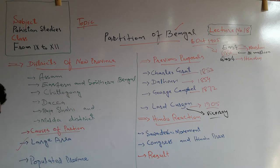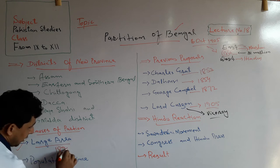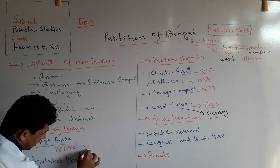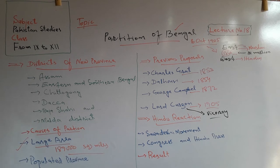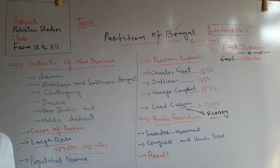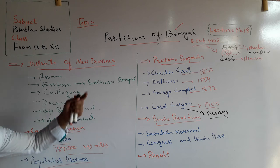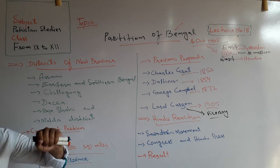The first reason to divide it was the large area — its area was 189,000 square miles. That is why it was the vastest province in the Indian subcontinent and could not be controlled by a single governor. Bengal was also a heavily populated province, and it was divided on the basis of population, which is why Muslims were in majority in the East wing and Hindus were in majority in the West.